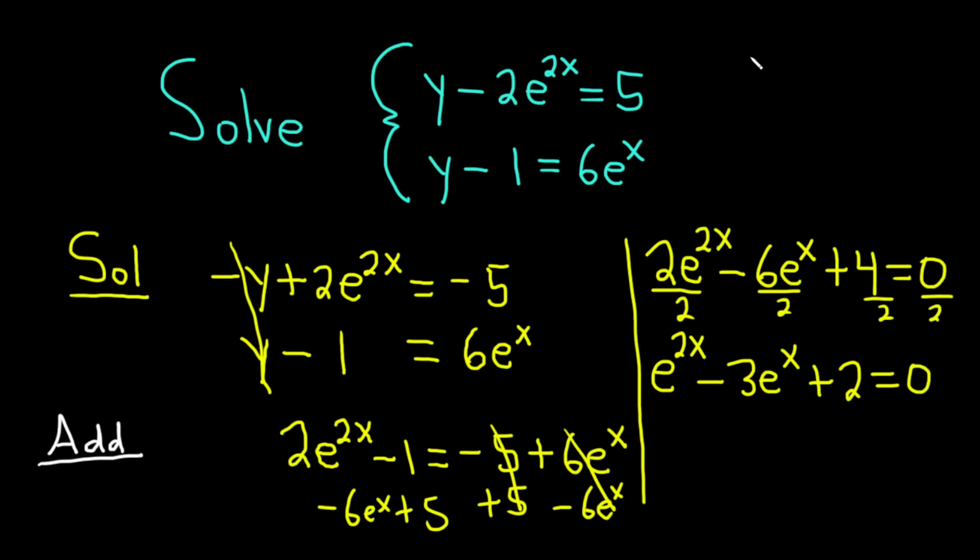This is actually a quadratic equation in e to the x. We can think of e to the 2x as e to the x quantity squared, right? Properties of exponents say if you have e to the x squared, you multiply the 2 and the x. So really, we can factor this. Parentheses e to the x, parentheses e to the x, and then here we have 0. And that's because when you multiply e to the x times e to the x, you get e to the x squared, which is the same thing as e to the 2x. So now we need two numbers that multiply to 2 and add to negative 3. It's pretty easy, just minus 1 and minus 2.